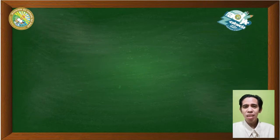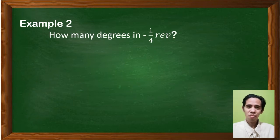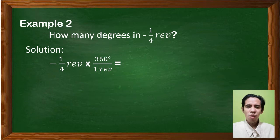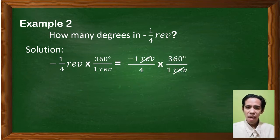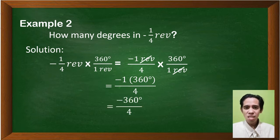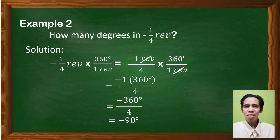How about if the direction of rotation is clockwise? It has a negative revolution. This is example number two for negative revolution: how many degrees in negative one-fourth revolution? Negative one-fourth revolution times 360 degrees over one revolution — cancel out the revolution unit. We have negative one times 360 degrees divided by four, which is negative 360 degrees divided by four, giving negative 90 degrees. So negative one-fourth revolution equals negative 90 degrees.